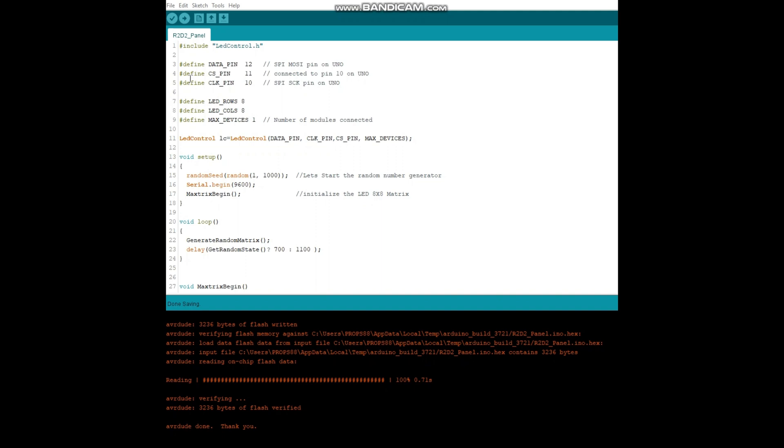Welcome to the code guys. This is our R2D2 panel code. Okay let's start out with all the pins. We have three pins here. The data pin and the CS pin and the clock pin. I have them 12, 11, 10.